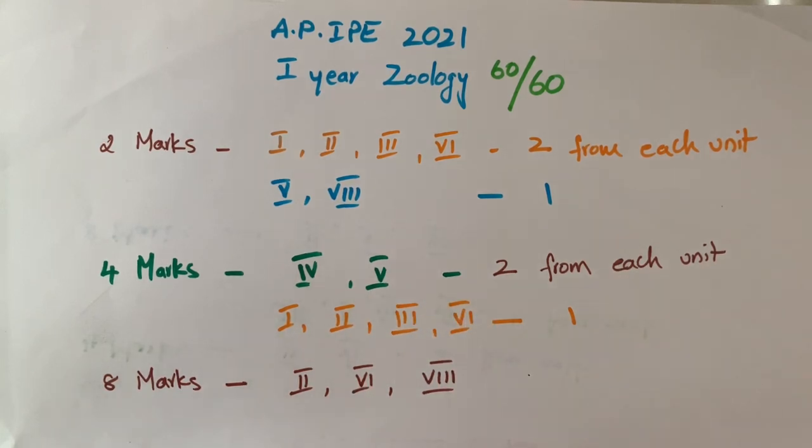The remaining 4 four-marks questions come from units 1, 2, 3, and 6, one from each chapter. Skip one of the chapters from these four. You can thoroughly prepare for 7 questions so that you can answer 6 perfectly.